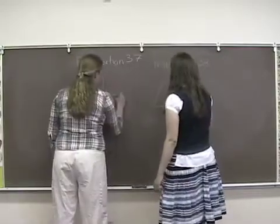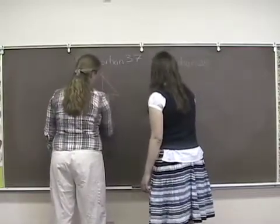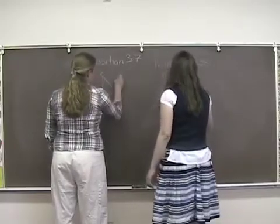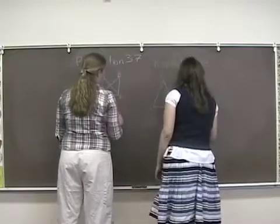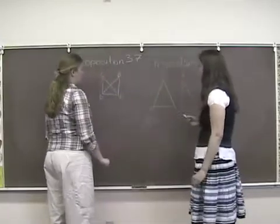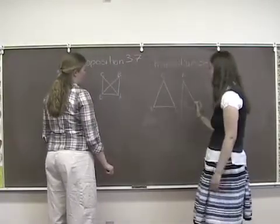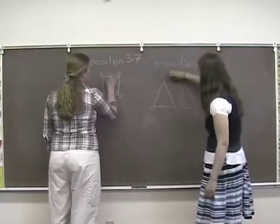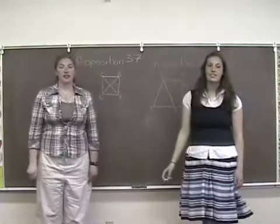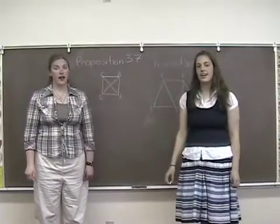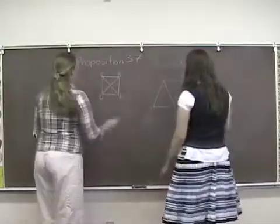Let triangles CDA and BDK. Each triangle is on the same equal basis DK, and the same parallels CB and DK. I say the triangle CDK is equal to the triangle BDK.